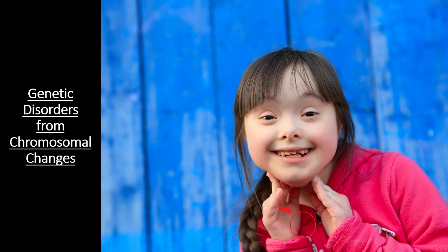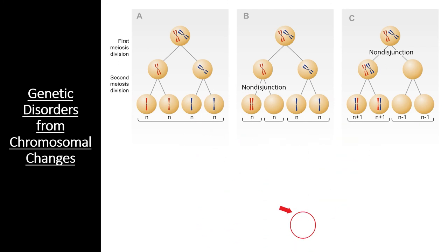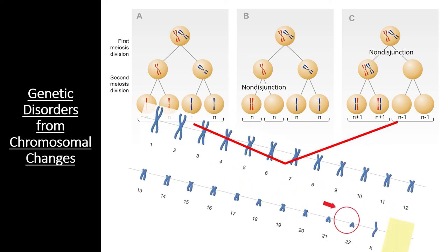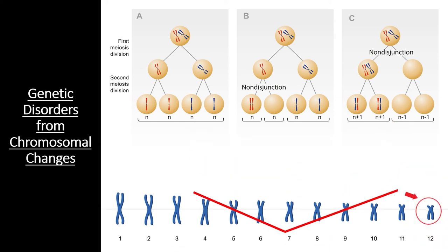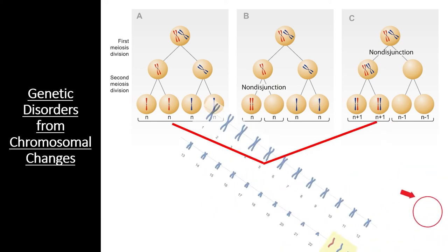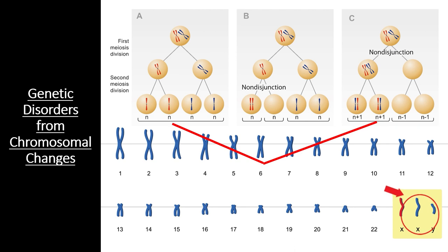Trisomy 21, for example, leads to the symptoms seen in patients with Down syndrome. However, there are many different kinds of non-disjunction events. If a non-disjunction event leads to a gamete without a certain chromosome, this can lead to only one copy of the chromosome in the offspring. Turner syndrome is one example, where patients have only one X chromosome instead of two. A similar genetic disorder is Klinefelter's disorder, a condition caused by two X chromosomes and one Y chromosome.